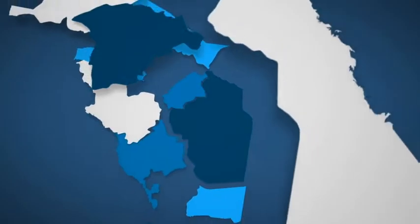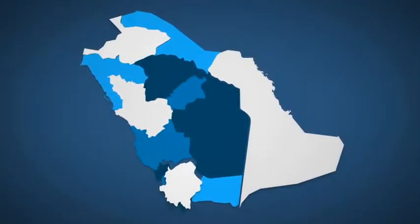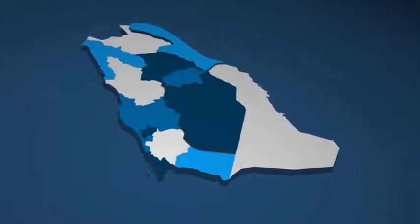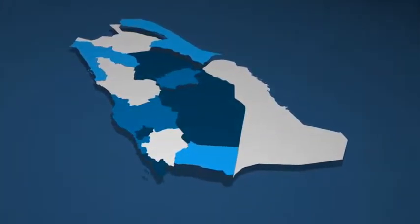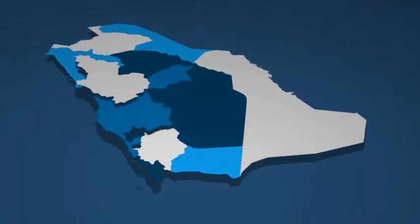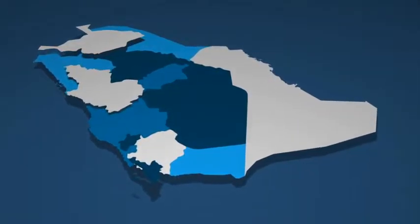Highlight regions with different colors to represent whatever you need the map to represent. Or get creative and add your own animations and images into the texture layers.